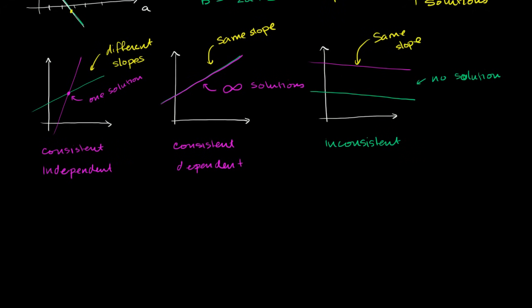So the times when you're solving systems where things are going to get a little bit weird are when you have the same slope. What defines the slope — and I encourage you to test this out with different equations — is if you have your x's and y's on the same side of an equation where they have the same ratio with respect to each other. Keeping that in mind, let's think about what types of solutions we might find.